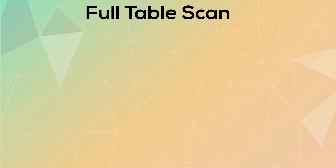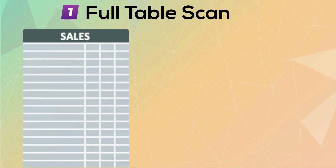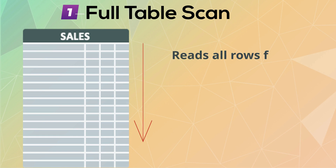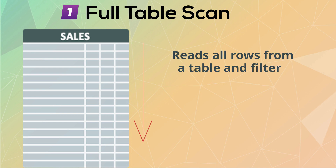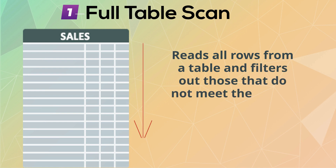The first access path is probably the best known and that's a full table scan. It reads all the rows in the table and filters out any rows that don't match the where clause predicates specified in the query.